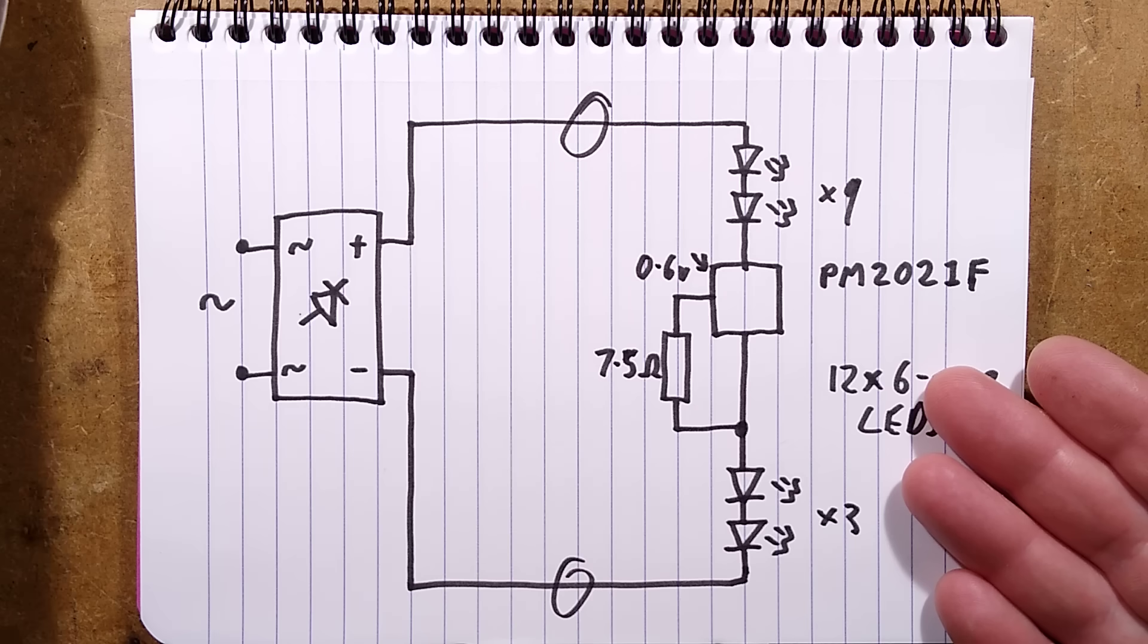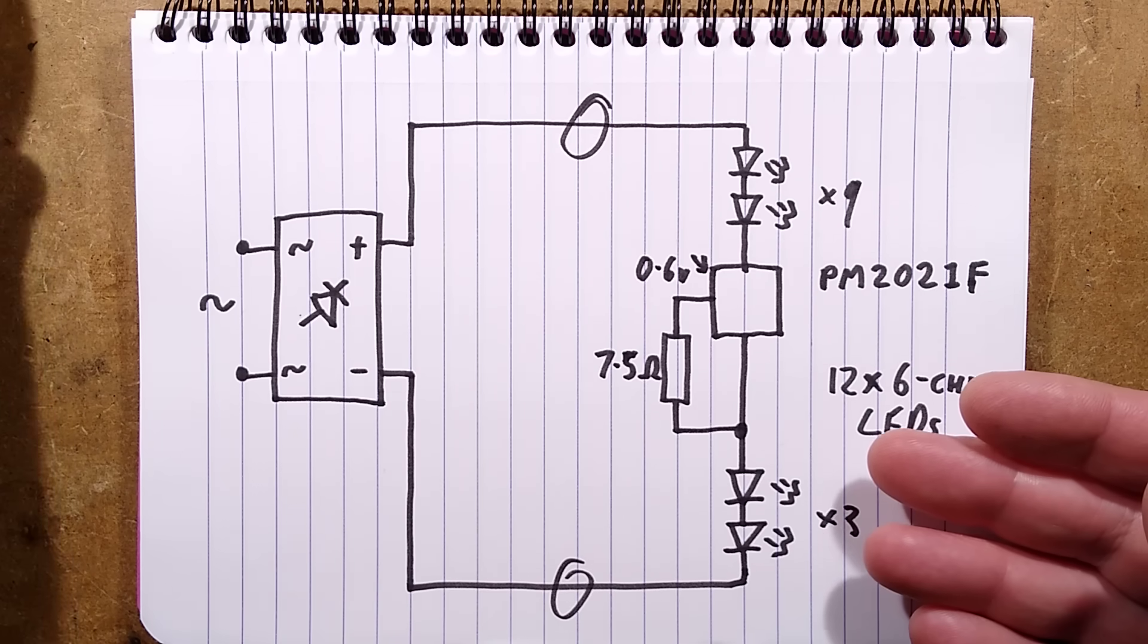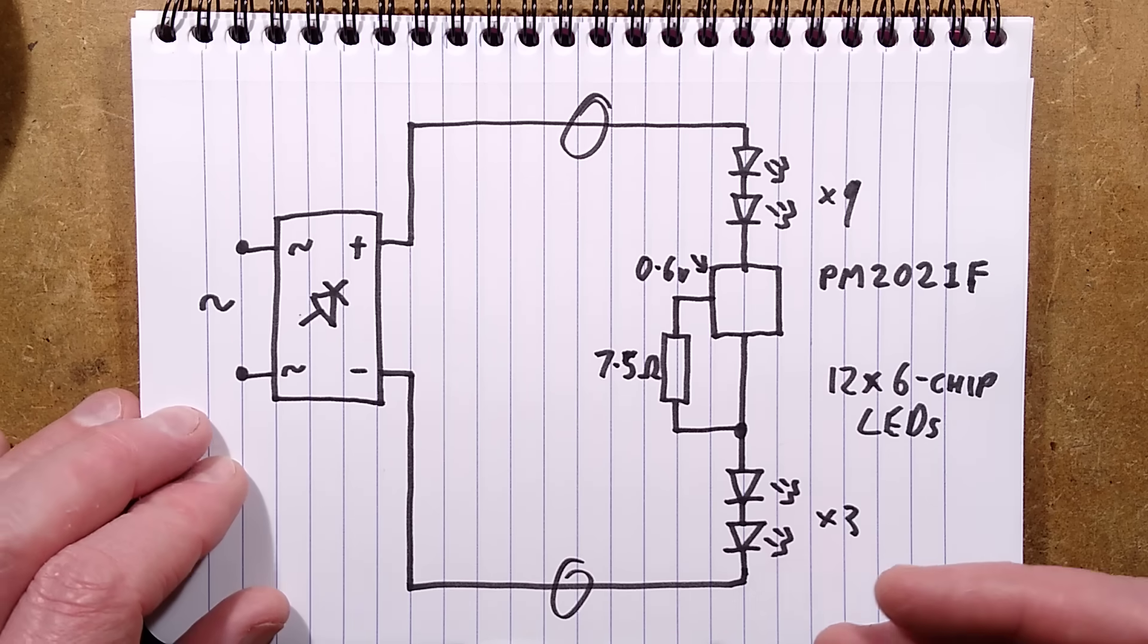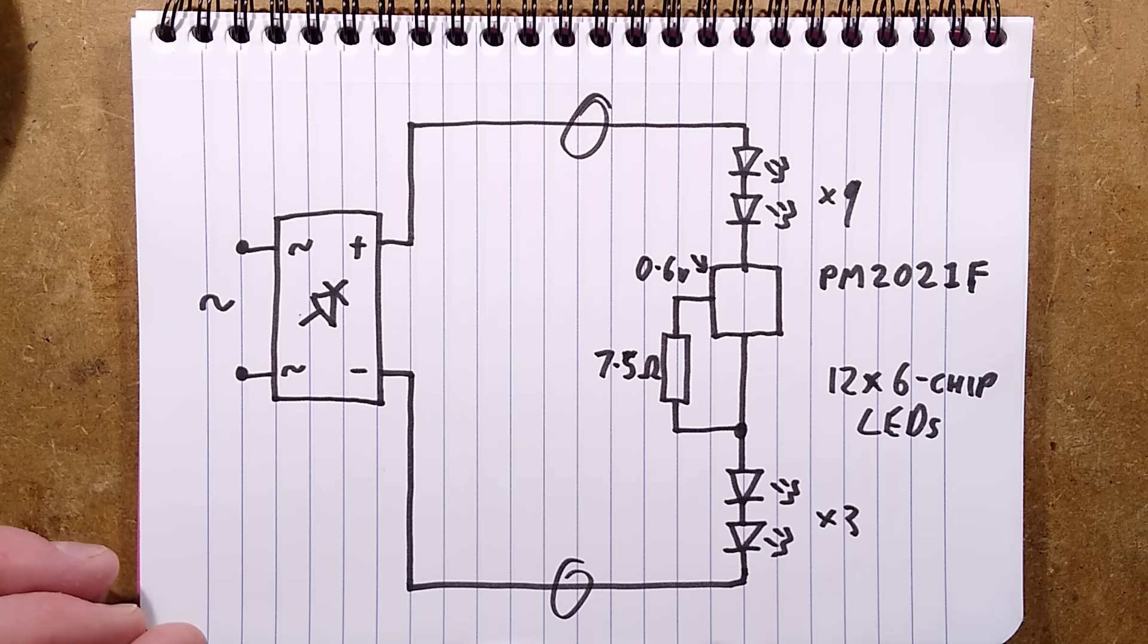Also, it's worth mentioning this is a 220 volt Chinese-y type light. I guess they probably do a similar light in the 120 volt versions with maybe a different number of chips or LEDs. But quite an unusual little light.